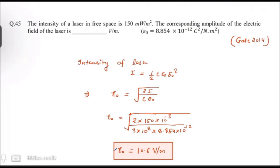Hello everyone, welcome to the GATE and NITL lecture course. Today we are going to solve question number 45 from K-2014 exam. In this question, it was given that the intensity of a laser in free space is 150 milliwatt per meter square. The corresponding amplitude of the electric field of the laser is what we have to calculate.